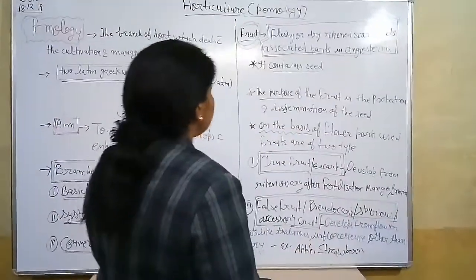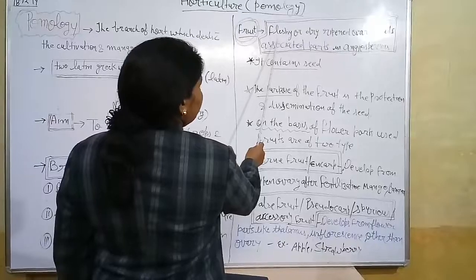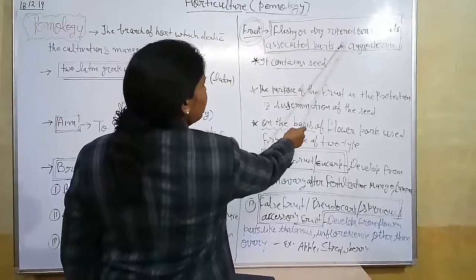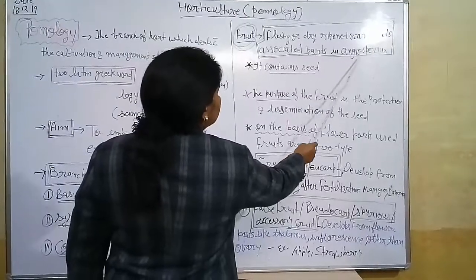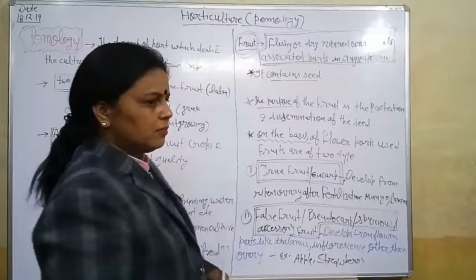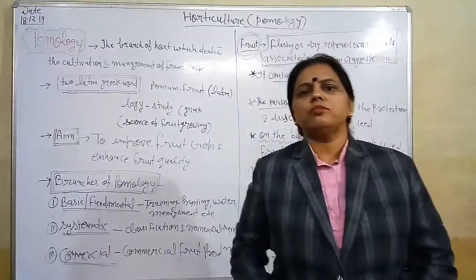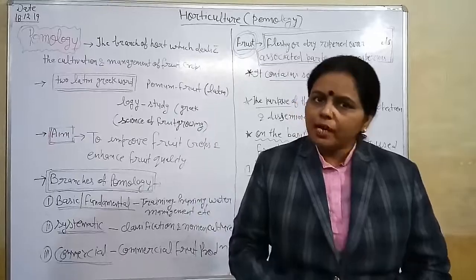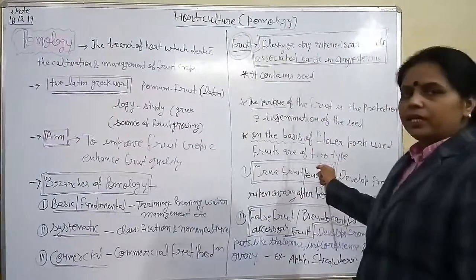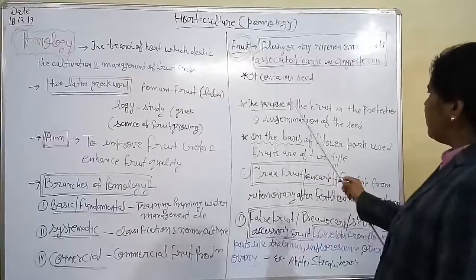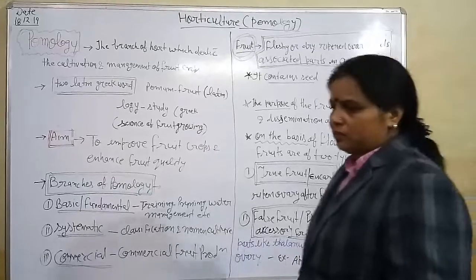As we know, pomology is the study of fruit growing, so we should know what is a fruit. Fruit is a fleshy or dry ripened ovary and its associated parts in angiosperms. According to this definition, we understand very well that fruit is a ripened ovary. It consists of seeds in it, and the purpose of the fruit is the protection and dissemination of the seed.